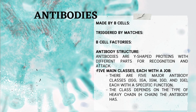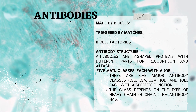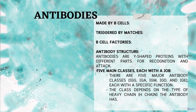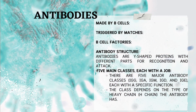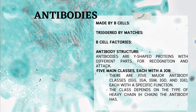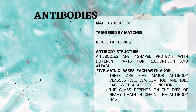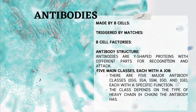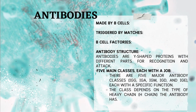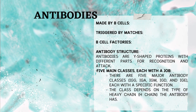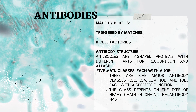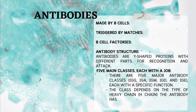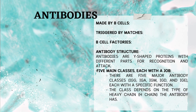Antibodies — your body's customized defenders. B cells are like immune system factories that produce antibodies. When a B cell's surface receptor encounters a specific molecule (antigen), like a germ, it activates. The activated B cell multiplies and matures into plasma cells, which are antibody-making machines. Antibodies are Y-shaped proteins with different parts for recognition and attack.